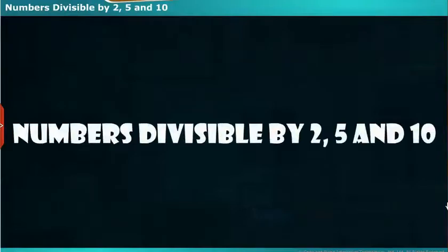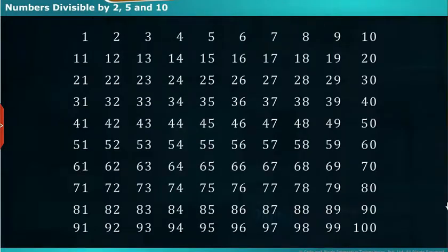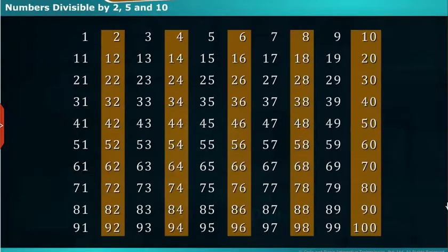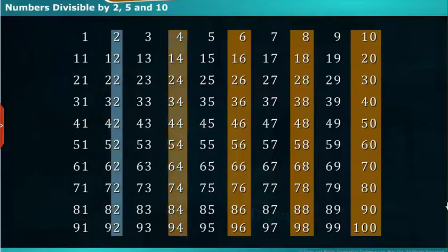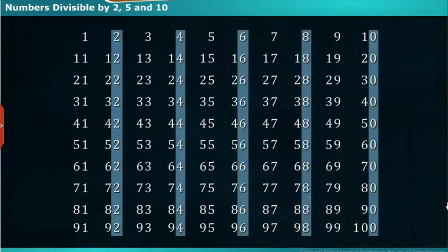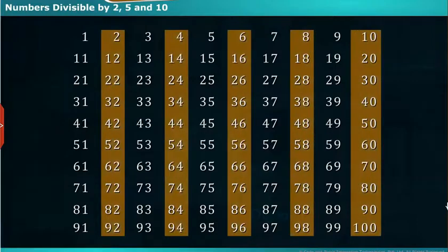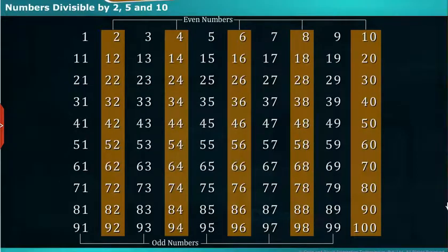Now we are going to learn about numbers that are divisible by 2, 5, and 10. Let's identify the numbers which are divisible by 2 — these leave the remainder as 0. If we observe the numbers carefully, the digits in the ones place are 2, 4, 6, 8, and 0. Hence, the numbers divisible by 2 are called even numbers, and numbers not divisible by 2 are called odd numbers. All numbers divisible by 2 are also called multiples of 2.